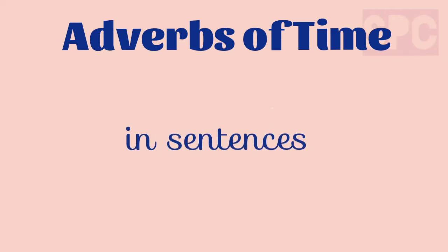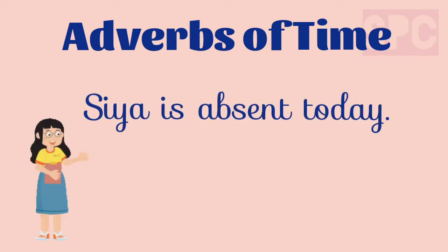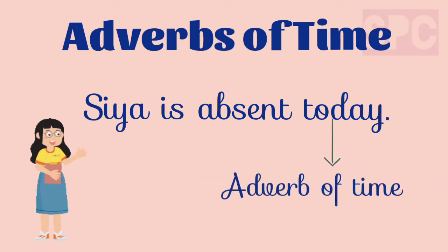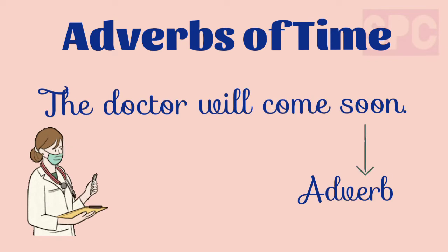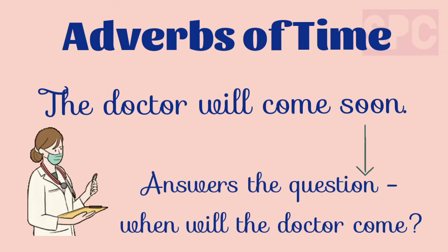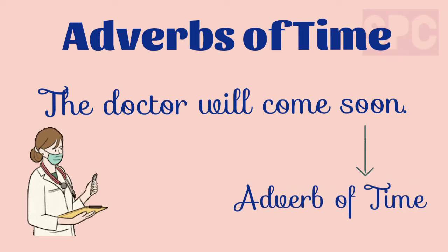Let's understand how to use adverbs of time in sentences. First example: Sia is absent today. In this sentence, the adverb 'today' answers the question 'when is Sia absent?' So, 'today' is the adverb of time. In another example, the adverb 'soon' answers the question 'when will the doctor come?' So, 'soon' is the adverb of time.